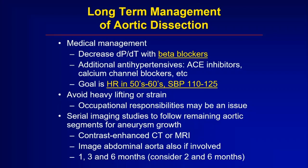We want a patient with an aortic dissection to have that upper number — the systolic blood pressure — under 120 millimeters of mercury for life. That can require three, four, or even five different classes of medications to manage. We also ask our patients not to lift heavy things or engage in sports where they might get bumped to their chest, because we think those activities may increase the chance that the aorta would enlarge or tear again.